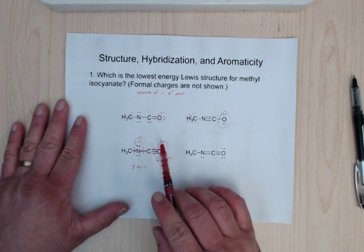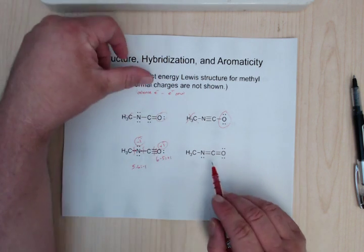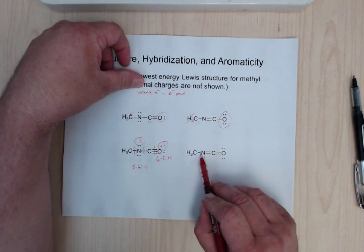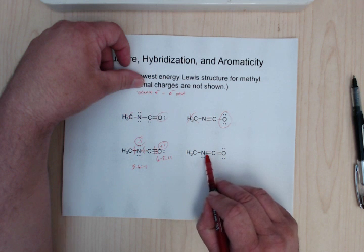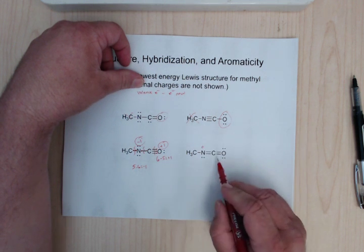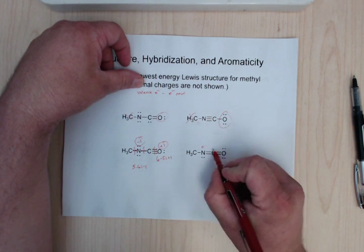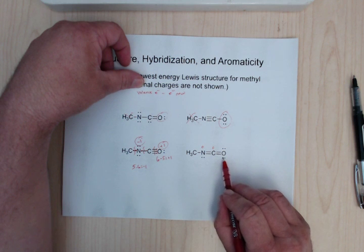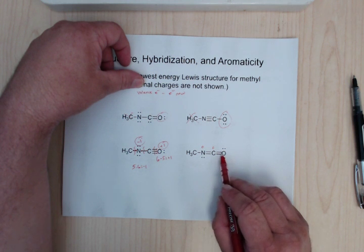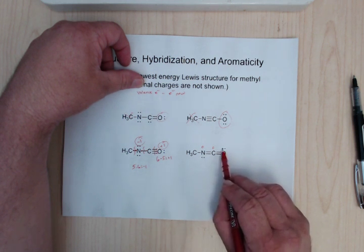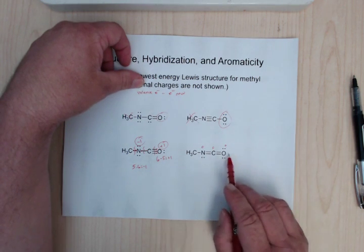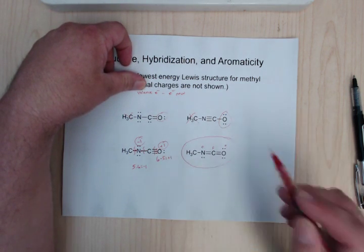So notice how there's quite a bit of charge separation, so that's not great. Here, you have 1, 2, 3, 4, 5 in the nitrogen, so that's 0. 1, 2, 3, 4, that's 0. Since there's no formal charges here, we're good.